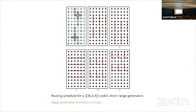A routing schedule found by hand for a BB code covering short-range generators (those not crossing the boundary) can be executed in five steps, including the pink donor bell pairs needed for purification. The full circuit depth is about ten times longer due to bell pair generation, purification, and CNOT gate implementation. Long-range generators would add additional routing rounds on top of this.